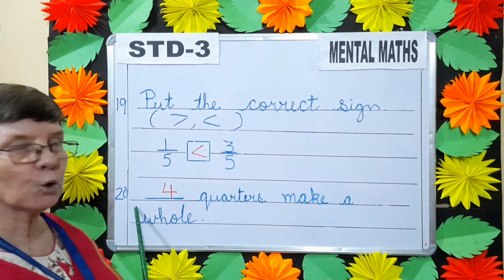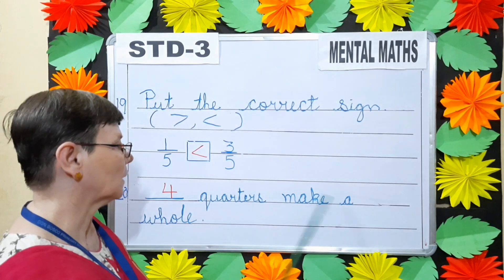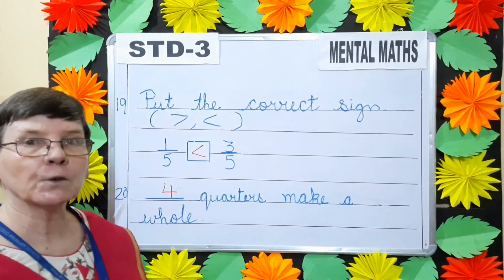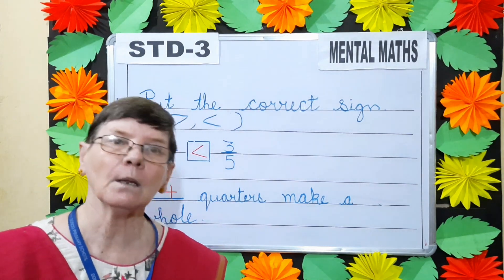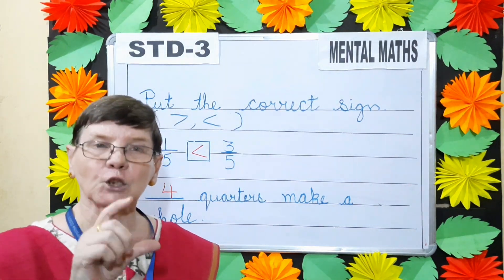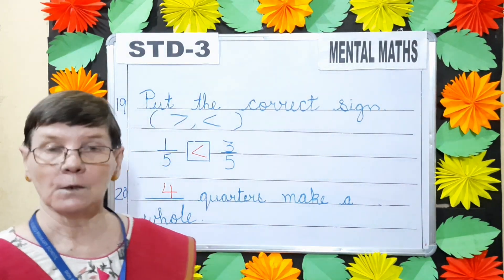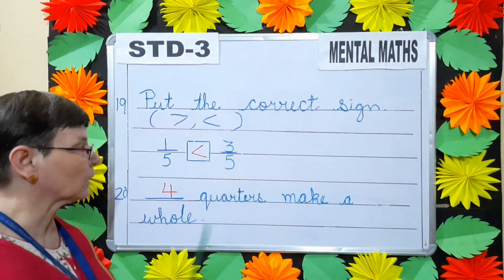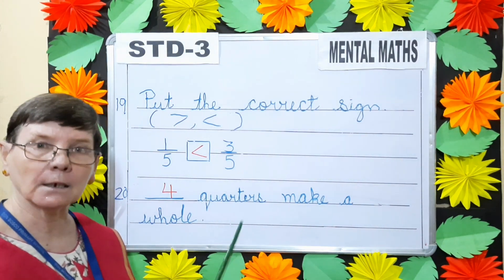Question number 20. Dash quarters make a whole. You take a figure, divide it equally into 4 equal parts. Each part is called a quarter. So, how many quarters make a whole? 4 quarters make a whole.